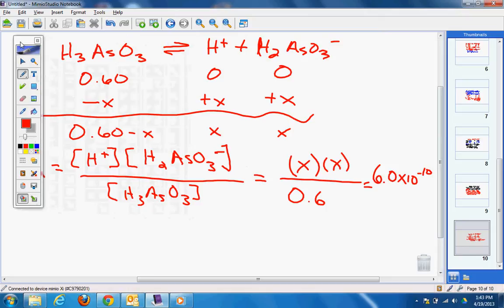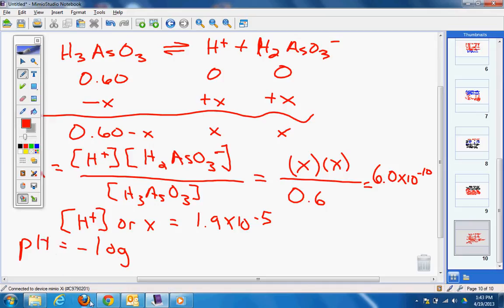And when we solve for that, we get 1.9 times 10 to the negative 5th. How do we get the pH? Negative log. pH equals negative log of 1.9 times 10 to the negative 5th. And when we do that, what do we get? 4.7.